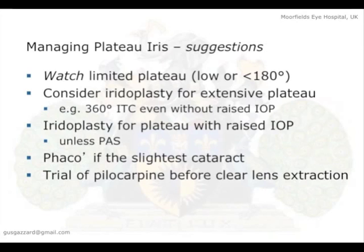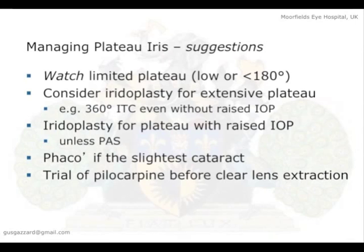These are suggestions only rather than strong recommendations, simply because it's an evidence-light zone. I would say we should watch limited or mild plateau. Consider iridoplasty for those with extensive plateau — if someone has 360 degrees of iridotrabecular contact completely obscuring the trabecular meshwork, I would probably perform an iridoplasty, but not all clinicians managing a lot of angle closure would. Iridoplasty for plateau with raised intraocular pressure, unless there's PAS. Phaco if you've got an excuse for it, and a trial of pilocarpine before clear lens extraction — because if you try the pilocarpine, the patient knows you've tried everything, and they know how unpleasant pilocarpine can be.